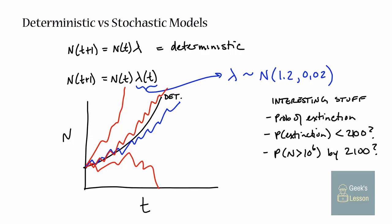There's a fairly solid argument, as a biased person who makes stochastic models for a living, that if you're going to model a biological process, particularly population processes, the best model, the most useful and the most interesting model is usually going to be the stochastic one. Unfortunately, they also tend to be a little bit more complicated to analyze.